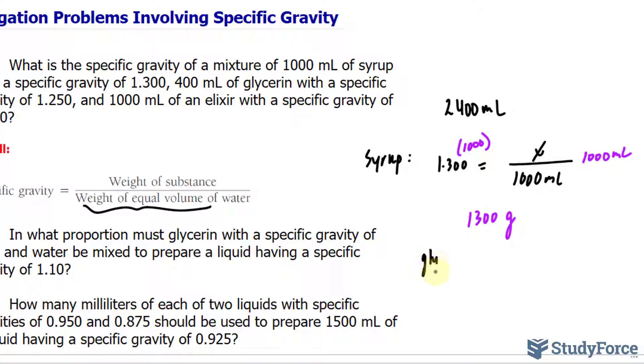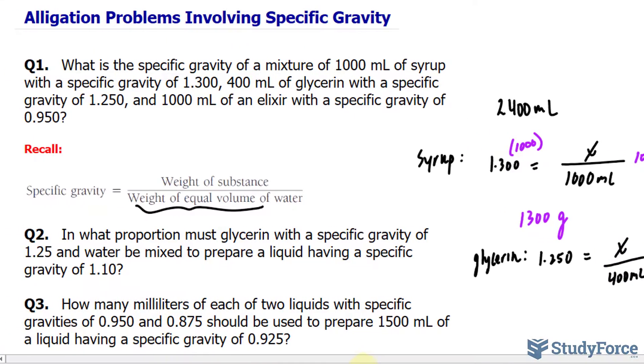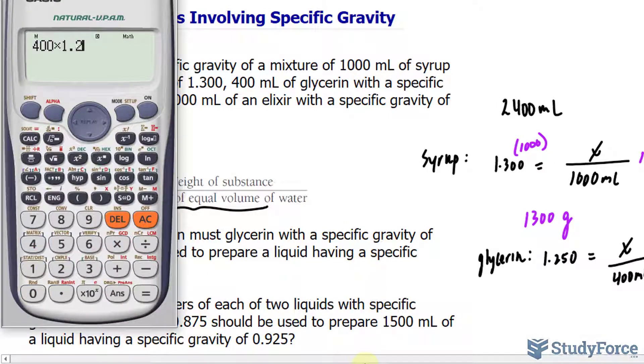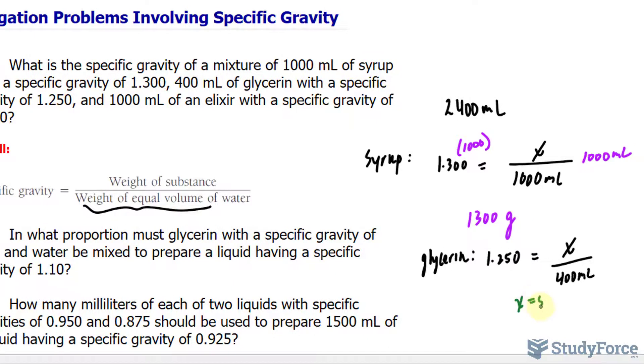We'll do the same thing for glycerin and the elixir. For glycerin, its specific gravity is 1.250, equal to x over its volume of 400 milliliters. Multiplying both sides by 400, we can use our calculator, gives us 500. And if you do the same thing for the elixir, you should end up getting a value of 950 grams.